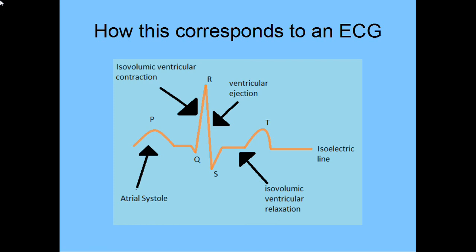You may ask, if the ventricle repolarises, why doesn't the atrial repolarisation show? Well, it does, but you cannot see it because the amplitude of the ventricle is much greater compared to the amplitude of the atria. Also you can see that there are times where the amplitude of the heart actually goes below the isoelectric line — this is caused by something called hyperpolarisation, where the body actually overcompensates for an increase in potential.